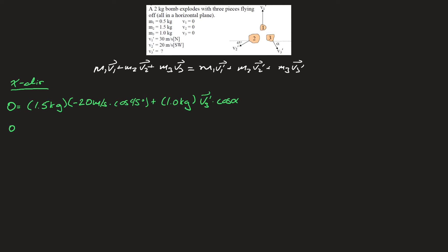So what I'm left with is 0 equals negative 21.2 kilogram meters per second, the momentum in the x direction of the second particle, plus 1 times v3 prime cos theta. If I divide by 1 kilograms, v3 prime cos alpha is equal to 21.2 meters per second.